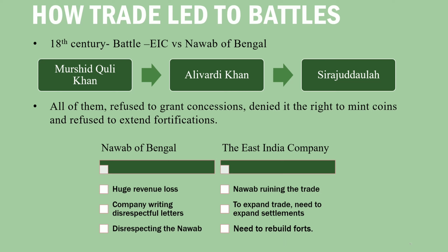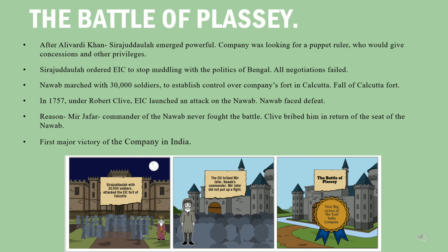All these conflicts had to come to a conclusion, and that conclusion was the Battle of Plassey. With the death of Aliwardi Khan, Siraj ud-Daulah took over as the Nawab of Bengal and emerged as a strong and powerful ruler. The company, on the other hand, wanted a puppet ruler who would grant them concessions and other privileges.